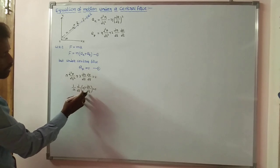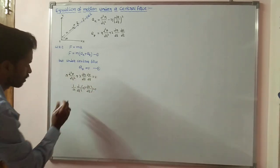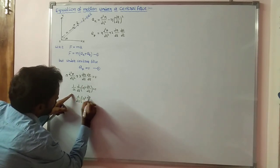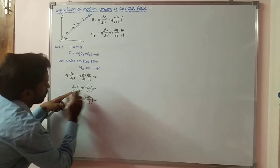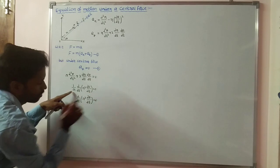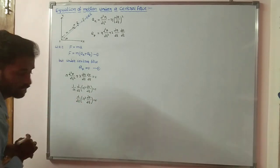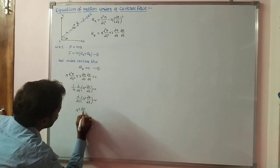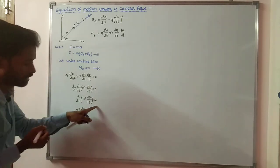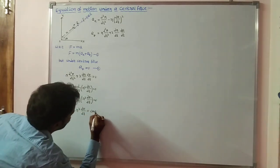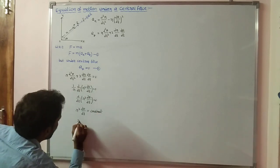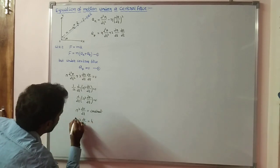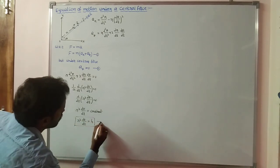Now we apply integration to both sides. The derivative and integration cancel, giving us r²·(dθ/dt) equal to a constant h. So r²·(dθ/dt) = h. Let us call this equation number three.